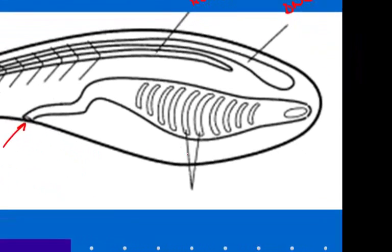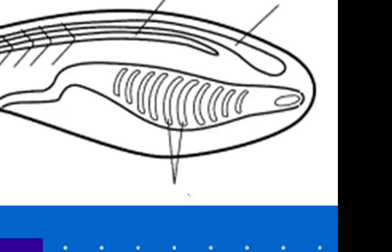And then there are also these pharyngeal pouches. Remember, our pharyngeal pouches, depending on what the organism is, will turn into different things. For some of our higher chordates, like humans and apes, they become our thyroid glands. For other animals, like fish, these pharyngeal pouches can turn into gills.